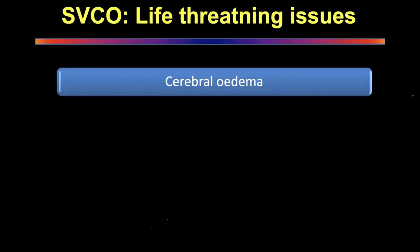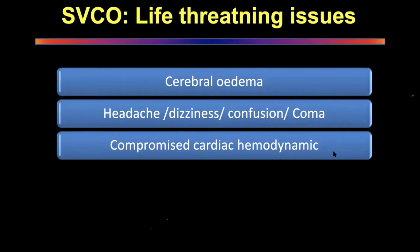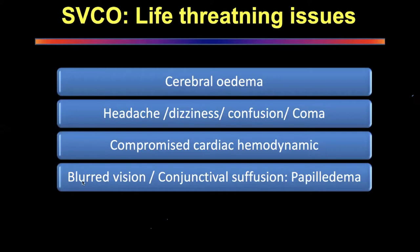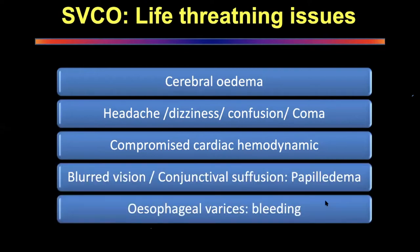The life-threatening issues with SVCO are: cerebral edema — the patient can go into confusion and coma — but the beauty is you reverse the SVC obstruction with a stent and it improves quite dramatically. Cardiac hemodynamic compromise can occur very quickly. Papilledema is always an indication of raised ICP — if patients complain of blurred vision or conjunctival suffusion, look into the fundus and make sure there is no papilledema or raised ICP.